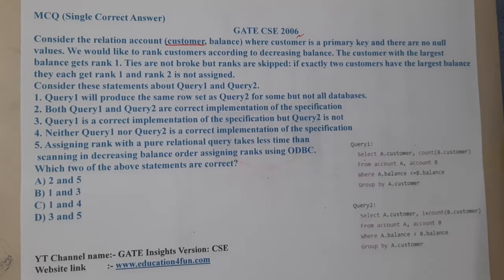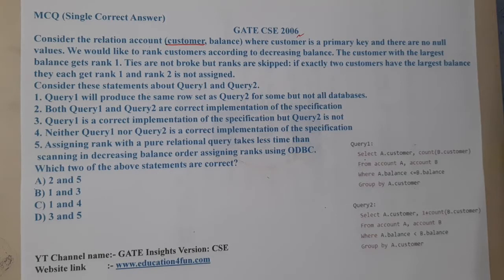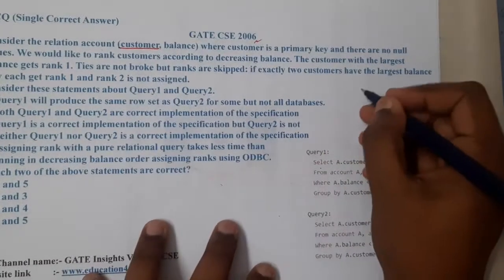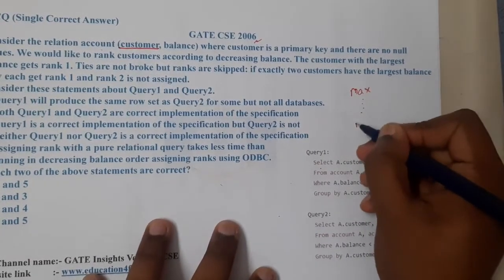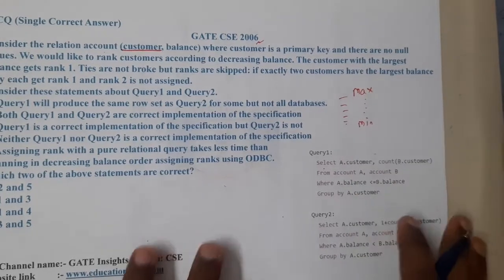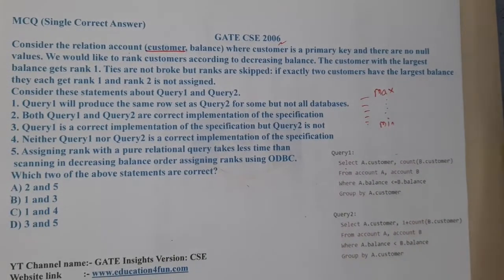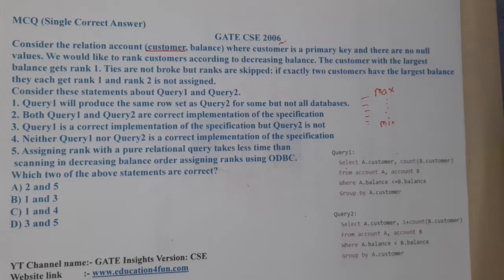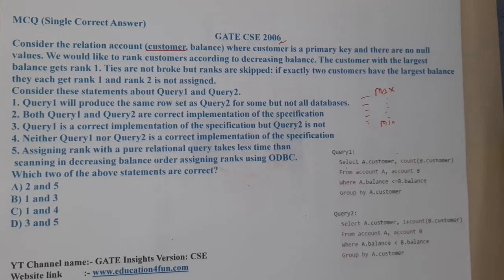We would like to rank customers according to their decreasing balance — that is, maximum to minimum. The customer with the largest balance gets rank one. Ties are not broken but ranks are skipped: if exactly two customers have the largest balance, they both get rank one and rank two is not assigned.